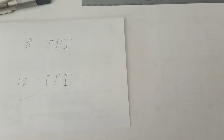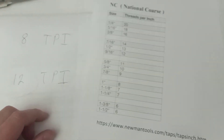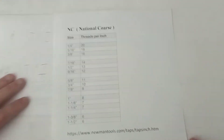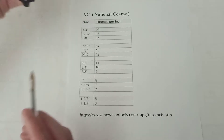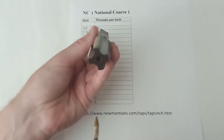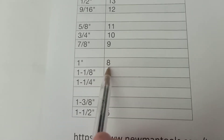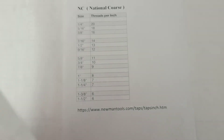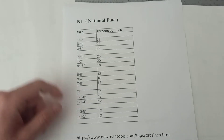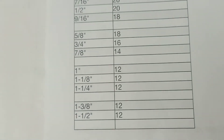The way you'd actually know if it's National Coarse or National Fine is you simply look at a chart. For National Coarse, if the diameter of a tap is one inch, there should be eight threads per inch. For a similar National Fine table, a one-inch tap would have 12 threads per inch.